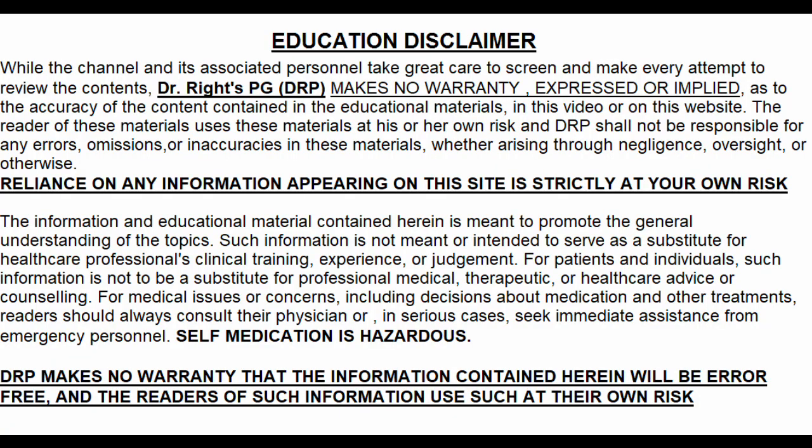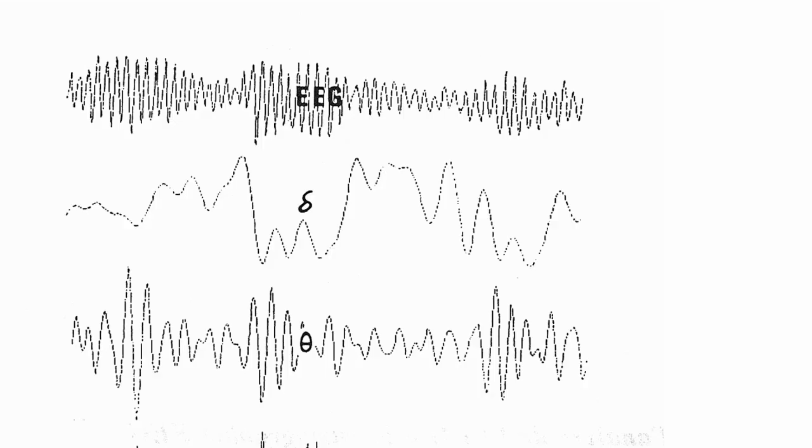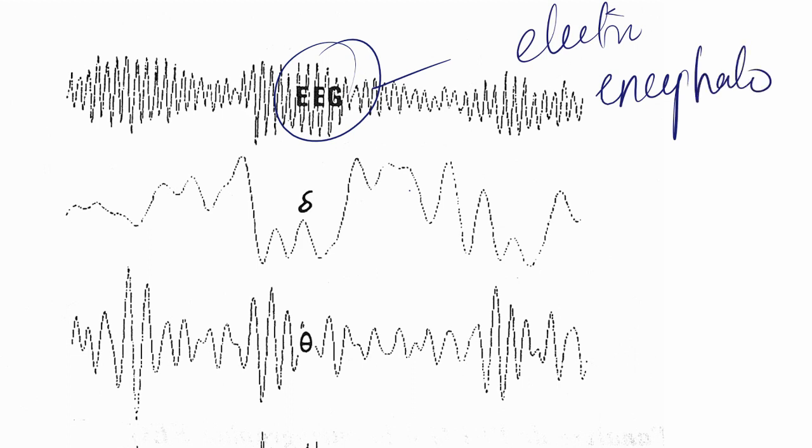Okay, EEG Physiology. Now EEG stands for Electroencephalography. Encephalo, that's the head. All the electrical activities in the head, brain importantly, are graphed. So it's a diagrammatical representation of what goes on inside your brain.